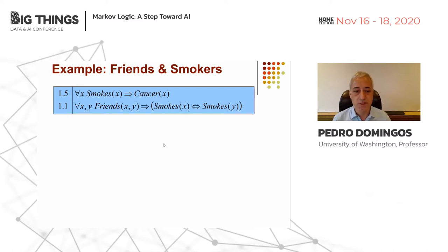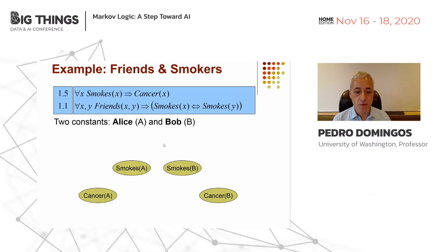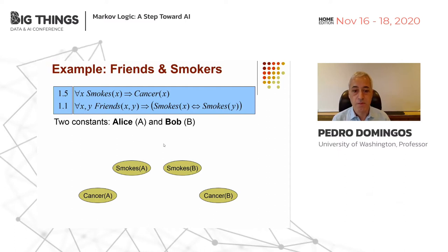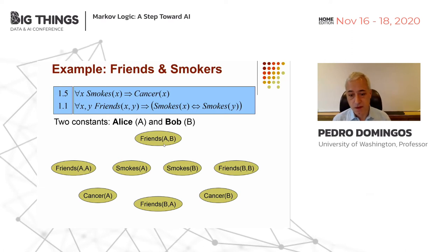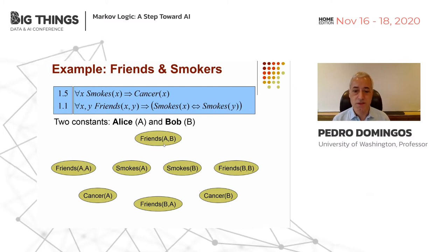What does this MLN represent in terms of the real world? Let's suppose we have a world with only two people in it — Alice and Bob — as two constants. We're going to have one node for every grounding of every predicate: smokes(Anna), smokes(Bob), cancer(Anna), and cancer(Bob). For friends(X,Y) we get friends(Anna,Bob) and friends(Bob,Anna), because friendship is not necessarily symmetric. We also get the degenerate cases friends(Anna,Anna) and friends(Bob,Bob). So now we have a set of Boolean variables, and the MLN defines a probability distribution over them.